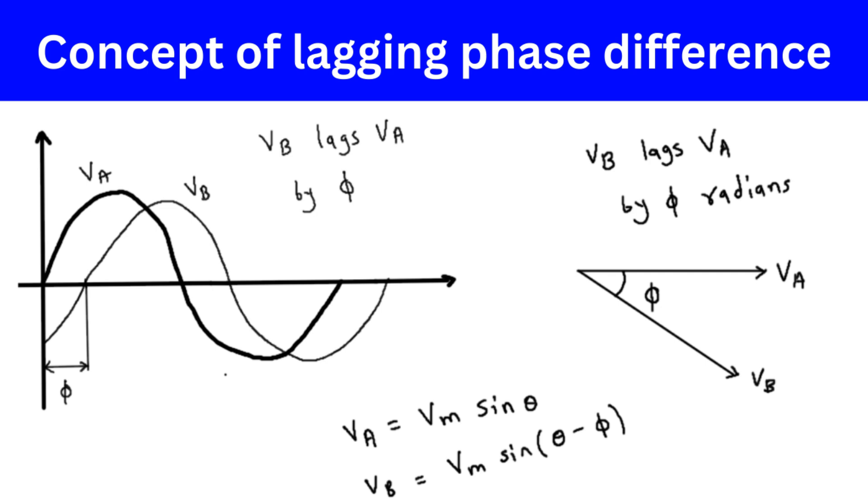A phasor is a vector that represents a sinusoidal quantity, where the length of the vector represents the amplitude and the angle of the vector represents the phase.